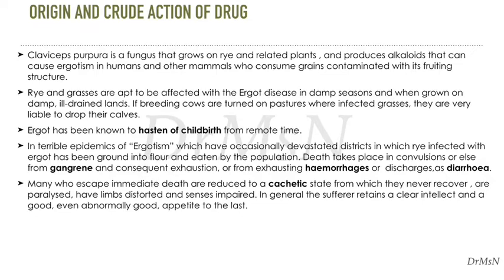Rye and grasses are apt to be affected with the ergot disease in damp seasons and when grown on damp, ill-drained lands. If breeding cows are turned on pastures with infected grasses, they are very liable to drop their calves. Ergot has been known to hasten childbirth from remote times. In terrible epidemics of ergotism, which have occasionally devastated districts in which rye infected with ergot has been ground into flour and eaten by the population, death takes place in convulsions, or else from gangrene and consequent exhaustion, or from exhausting hemorrhages or discharges such as diarrhea.